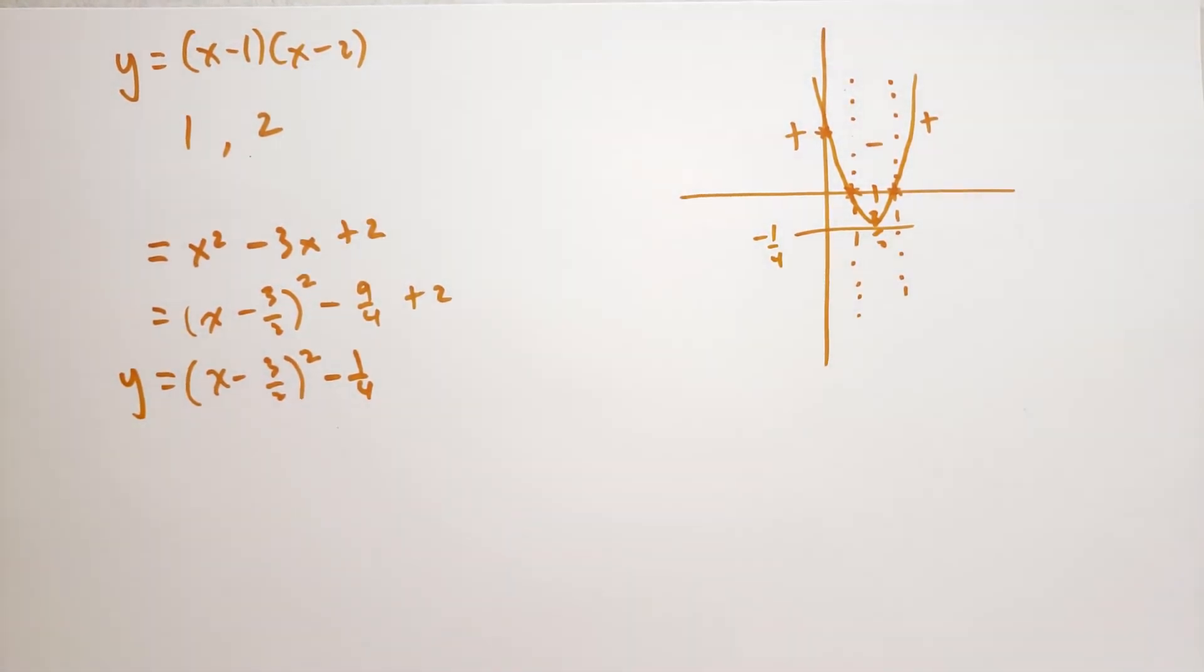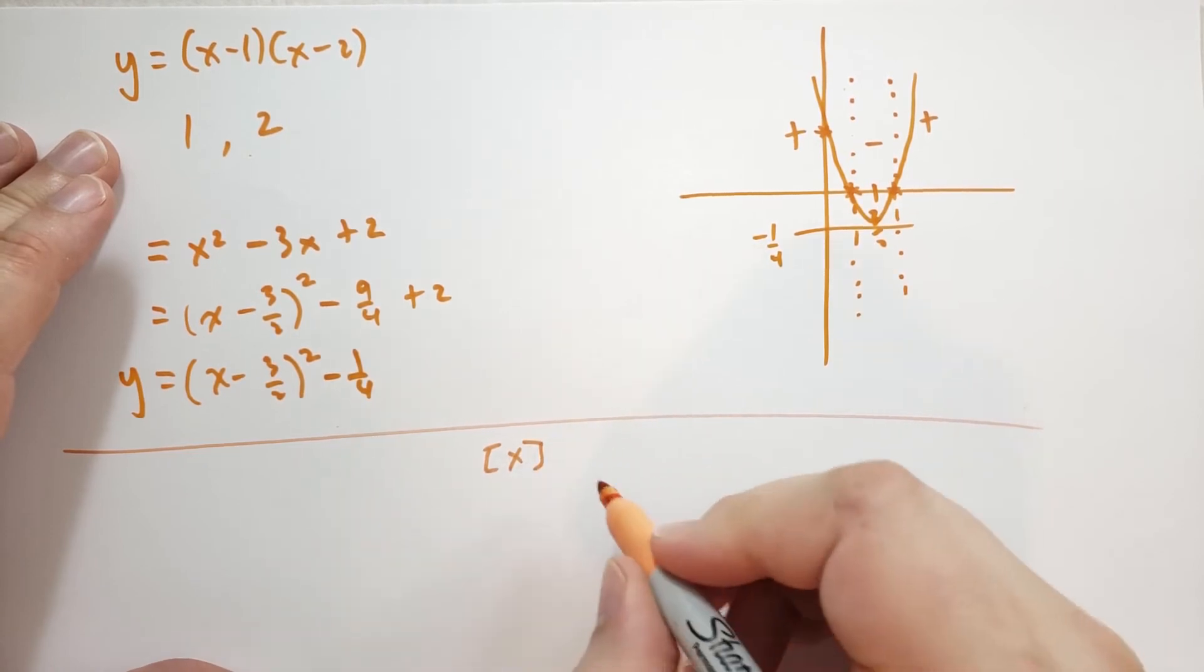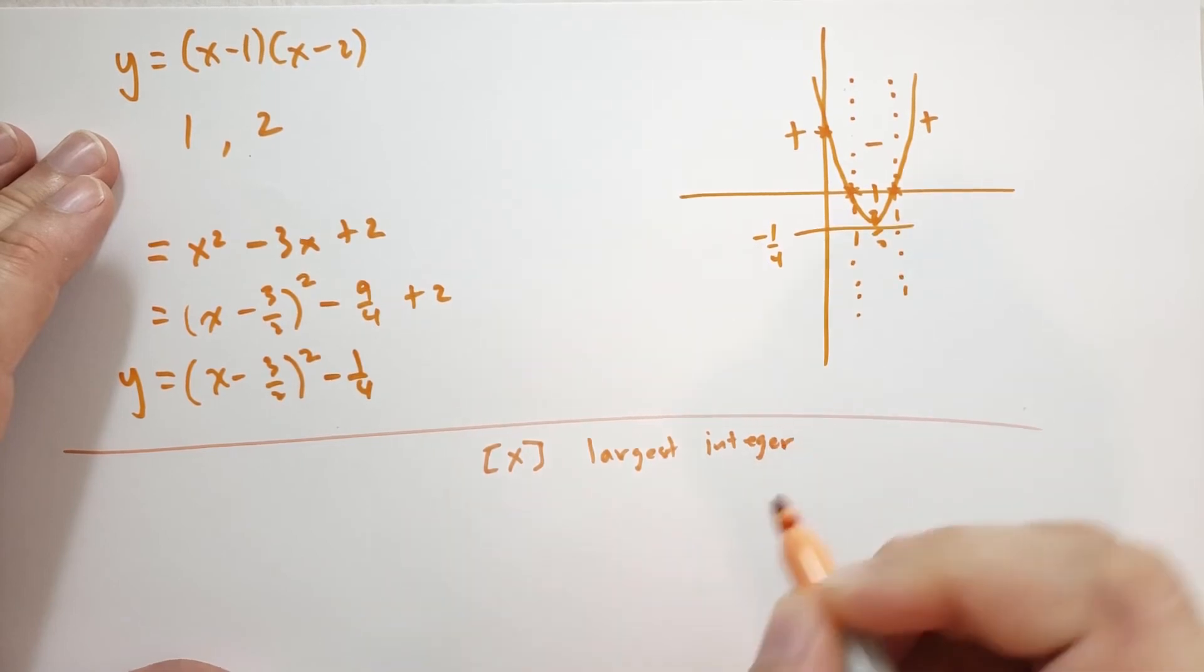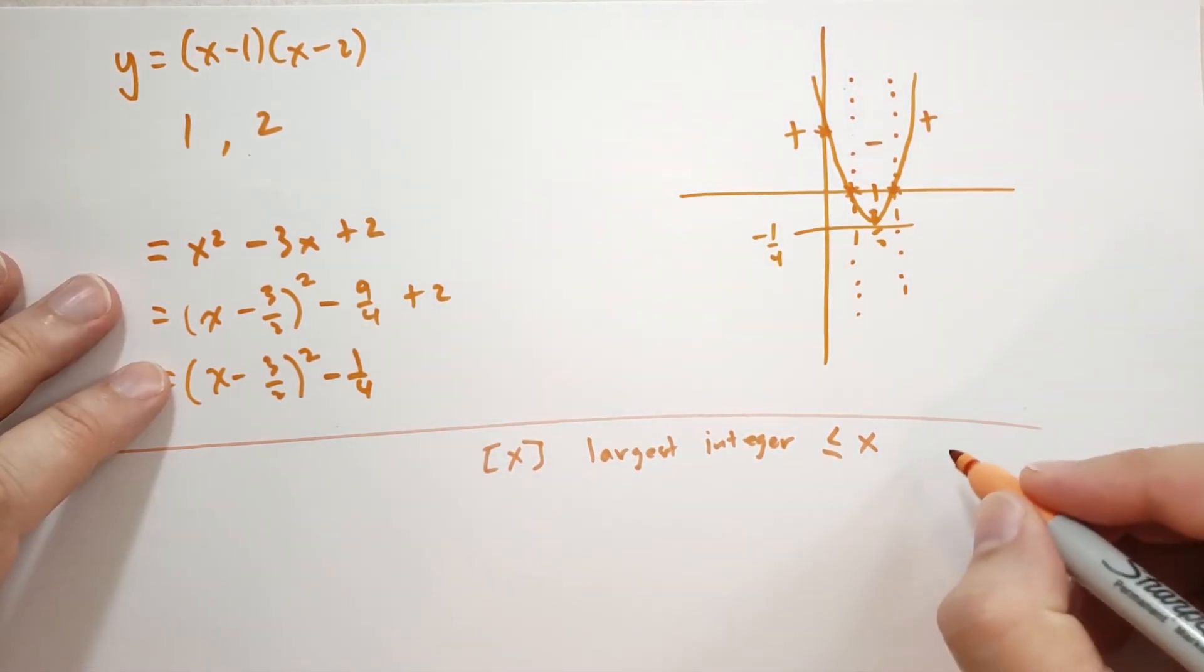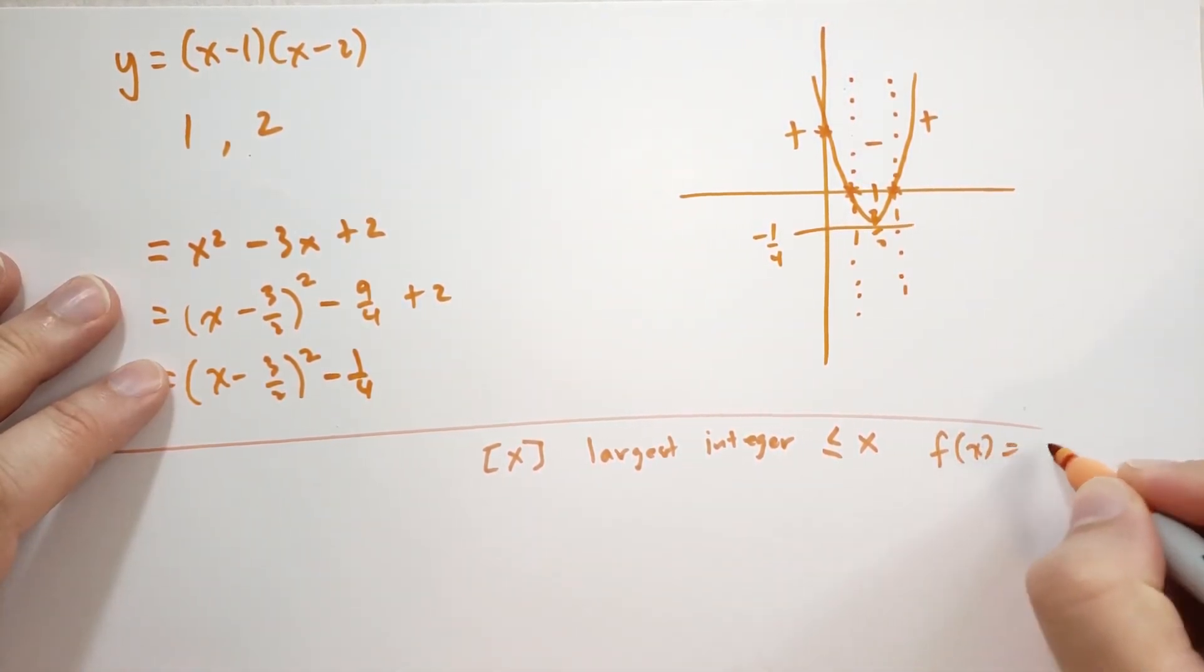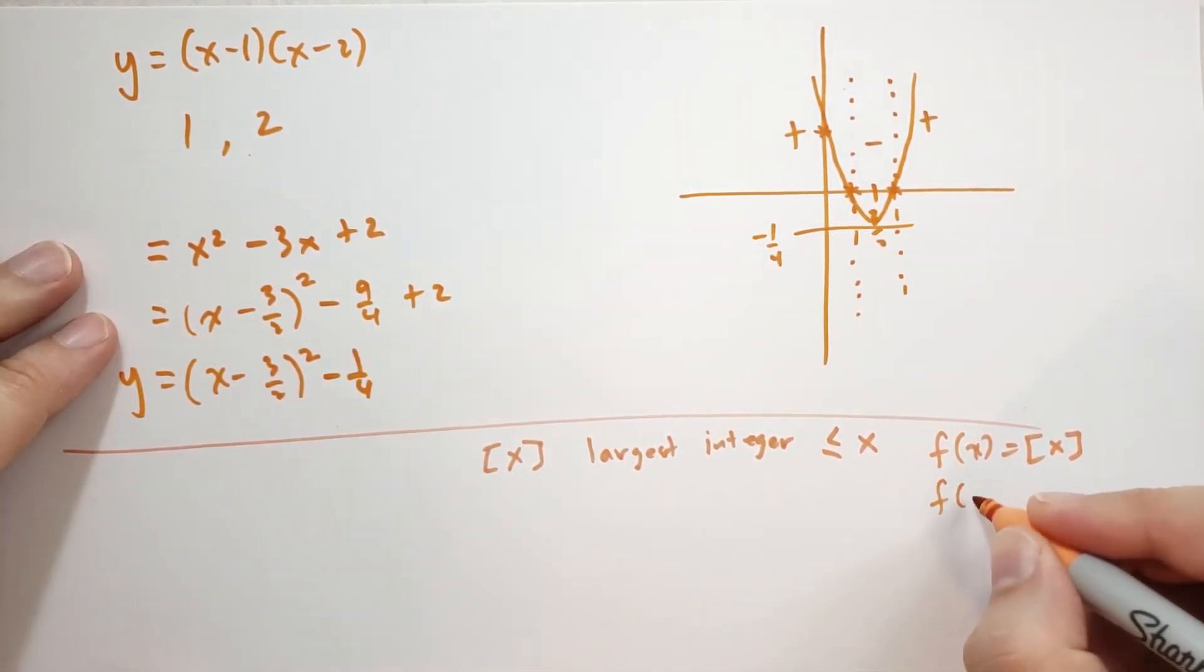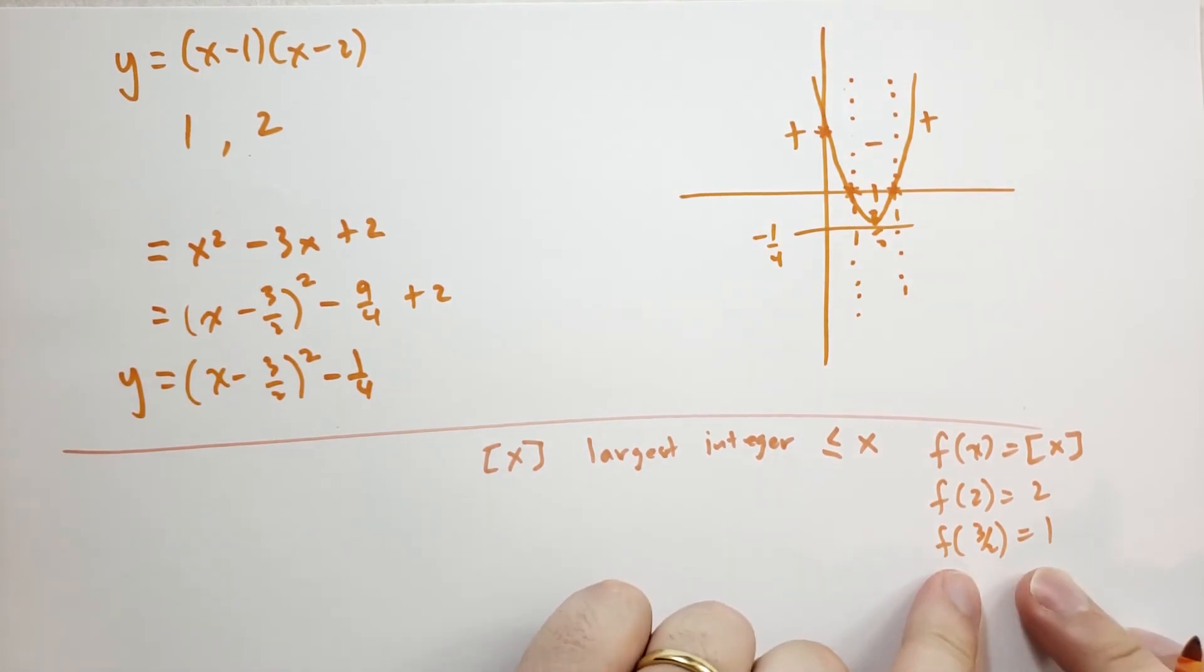And one final function that he wants us to consider. So he's going to say, if we have x, then this is the largest integer that is less than or equal to x. So if we had the function f(x) equal to this operation, then for instance, we'd have f of 2 would be 2, but f of 3 halves would be 1, because the largest integer that's less than or equal to 3 halves is 1.